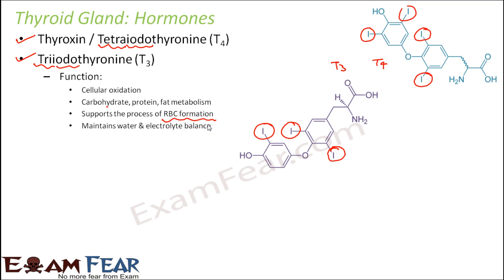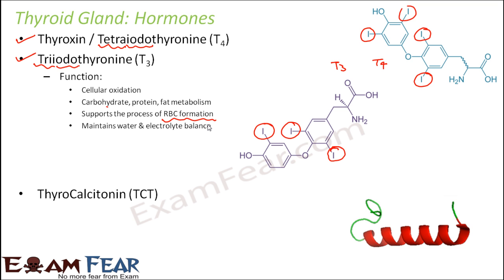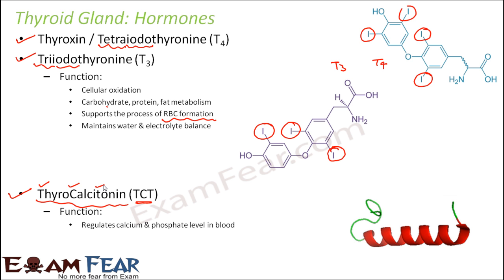Another hormone secreted by the thyroid gland is thyrocalcitonin, often abbreviated as TCT. Its function is to regulate the calcium and phosphate levels in the blood. Calcium and phosphorus are important constituents of bones, so a deficiency can lead to bone problems. Thyrocalcitonin helps maintain these levels within the correct range.